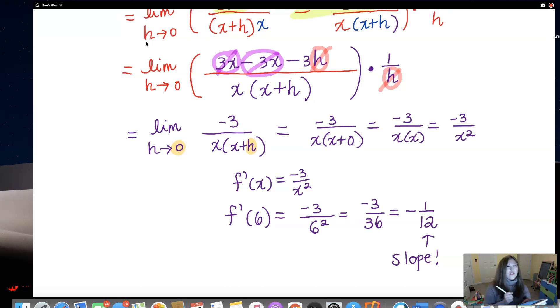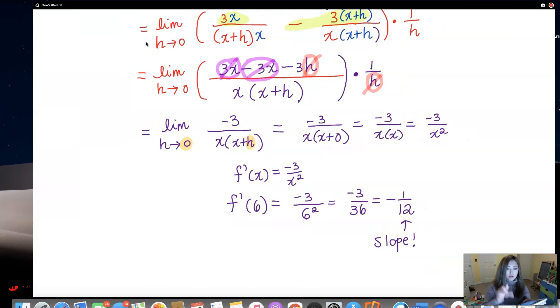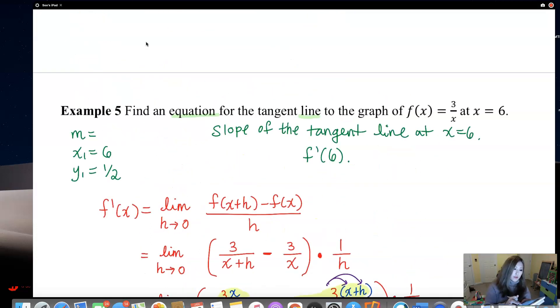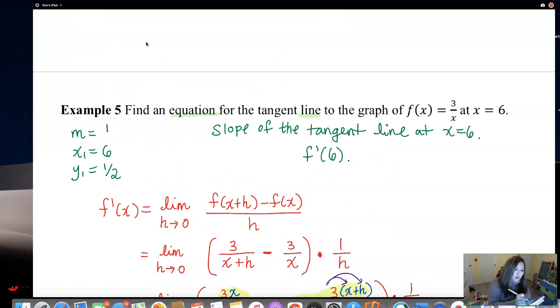We can graph it all, but let's go ahead and first answer this question. So slope is negative 1 over 12. Let me write that down, negative 1 over 12. So I have m, x1, and y1. So you know what, let me go ahead and bring this, copy this down, and then I will go ahead and write the equation of the line.